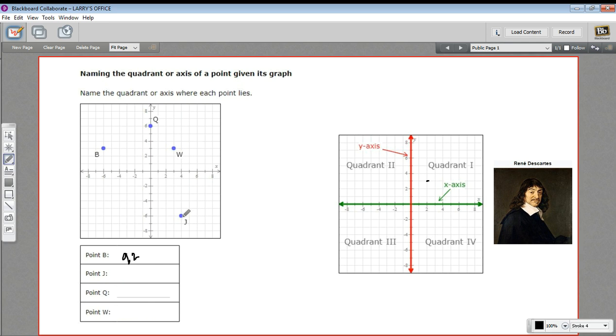Next is point J. That's not on an axis either, so we need to know which quadrant. And if we start here, we have 1, 2, 3, 4. So that's quadrant 4 for point J.